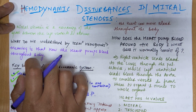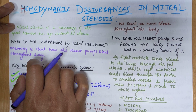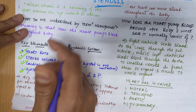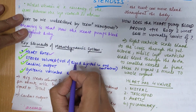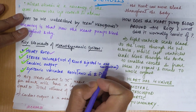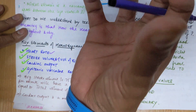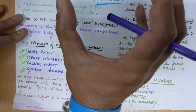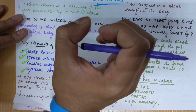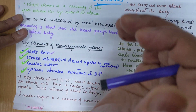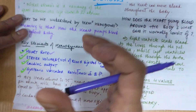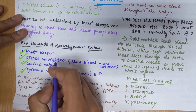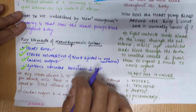What do we understand by the term haemodynamics? Haemodynamics means how the heart pumps blood throughout the body. Key elements of the haemodynamic system include heart rate, stroke volume — which is the volume of blood ejected in one contraction — cardiac output, systemic vascular resistance, and blood pressure.